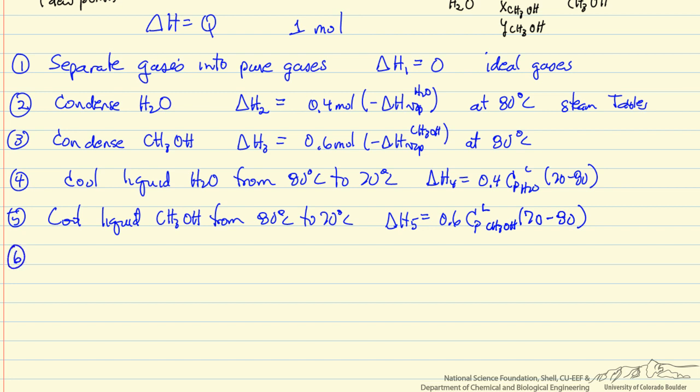Now we have the two pure liquids at 70 degrees, and we are going to mix them to get to our final condition at 70 degrees C. There would be an enthalpy change if this is not an ideal solution, so delta H6, delta H of mixing, which we would need data that we would have to look up somewhere to do this part of the calculation.